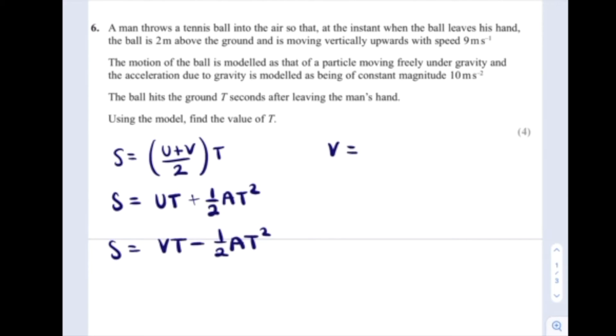We've also got the SUVAT equations that have V at the beginning. This is how I remember them. V equals U plus AT, and V squared equals U squared plus 2AS. So I just write all those down and I'm going to pick which one I want in a minute.